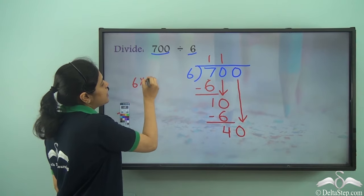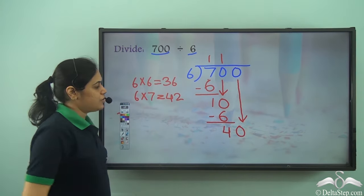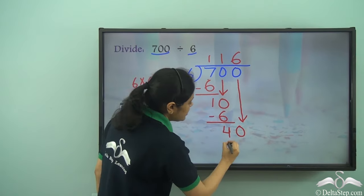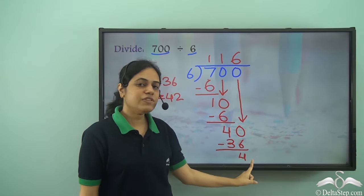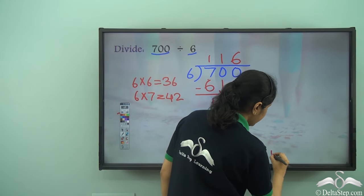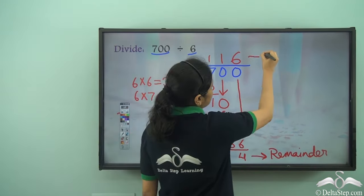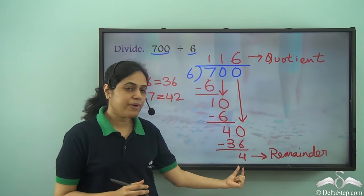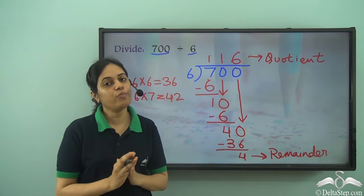I bring this 0 down to make it 40. How many times does 6 go into 40? I know 6 into 6 is 36 and 6 into 7 is 42. 42 is greater than 40, so I need to consider 36. 6 into 6 is 36 and I subtract it to get 4. I have no digits left to bring down, so I am left with 4 which is less than 6. So 4 is my remainder and the quotient is 116. Always remember the remainder will be less than the divisor.